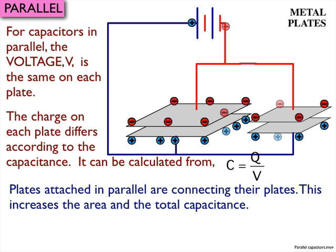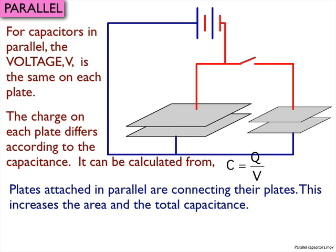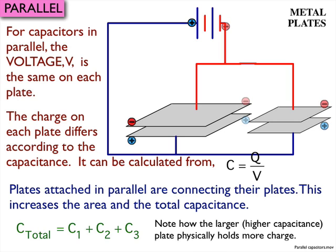Finally, the total capacitance of capacitors in parallel is just added up. All you do is add them all up. The total capacitance, or the equivalent capacitance, equals C1 plus C2 plus C3. You just add up all the capacitance, and that's it.